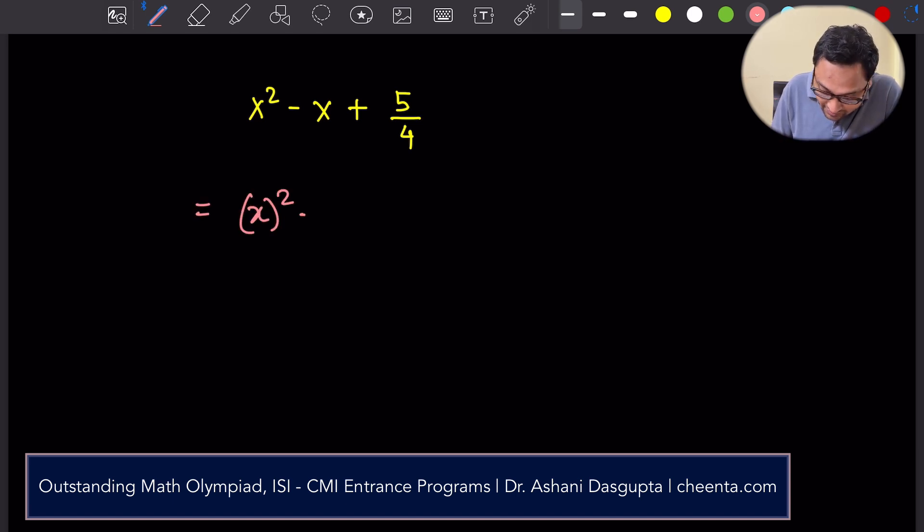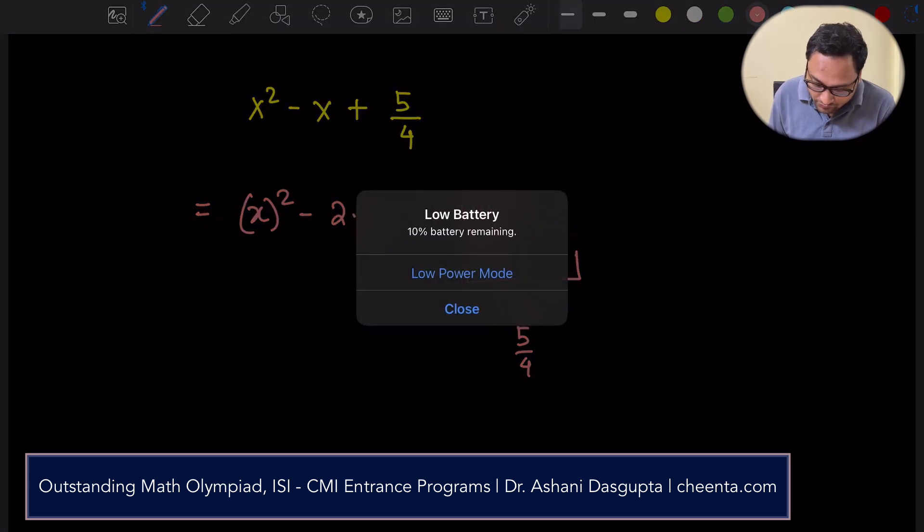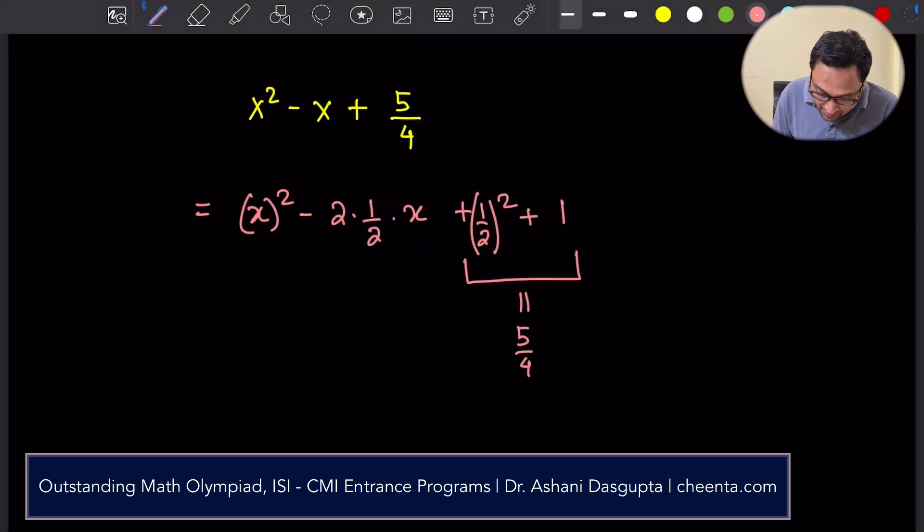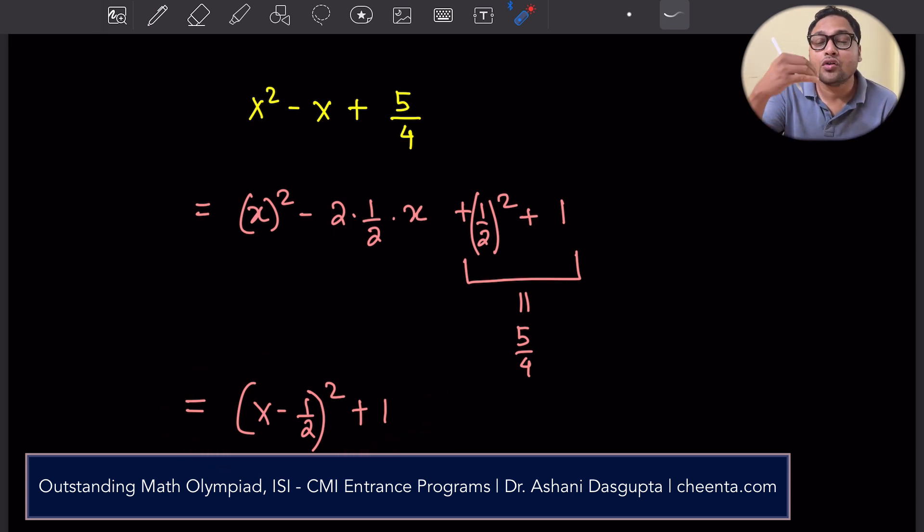I'll write x square minus 2 times half times x plus half square plus 1. I mean, this part is just 5 by 4. I mean, you can check. 1 by 2 whole squared is 1 by 4 plus 1 is 5 by 4. So why did I write like this? Because this will now become x minus half whole square plus 1. This is very important because you immediately notice that this entire thing is either 1 or more than 1.